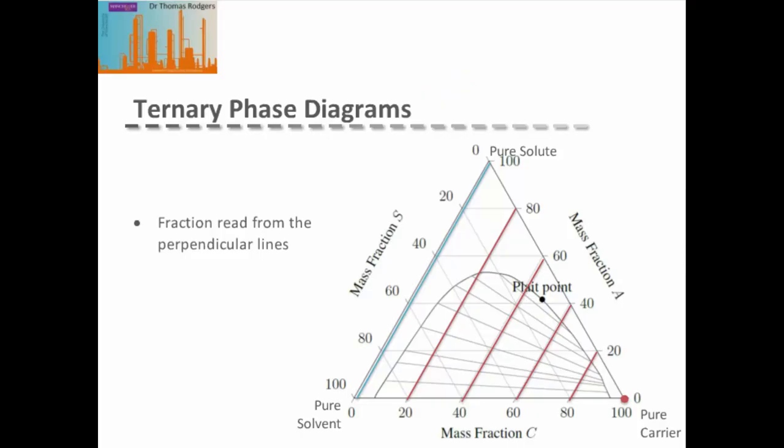To read the composition of these ternary phase diagrams, we use the grid lines that are perpendicular to our pure component. For example, let's look at our carrier, C. You can see that the bottom axis tells you the mass fraction of our carrier. Therefore, the bottom right hand corner, which is labelled with a red dot, must be our pure carrier. The axis opposite this, which is coloured in blue, represents zero carrier.